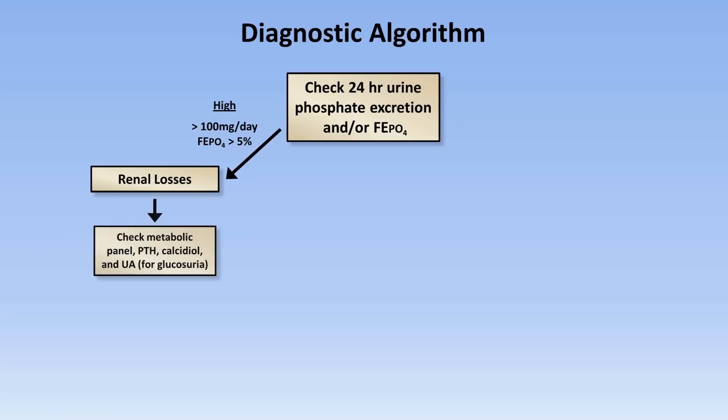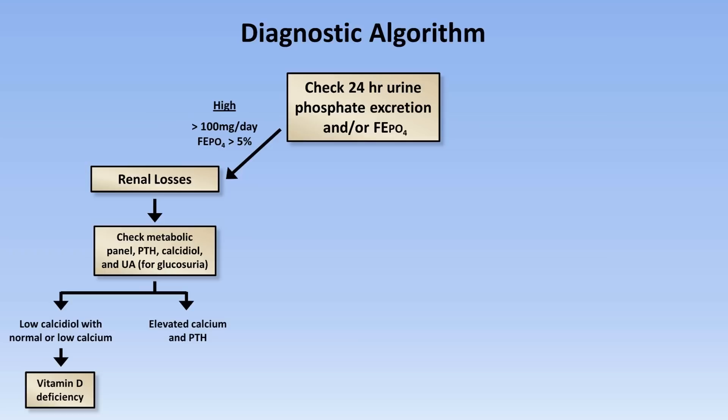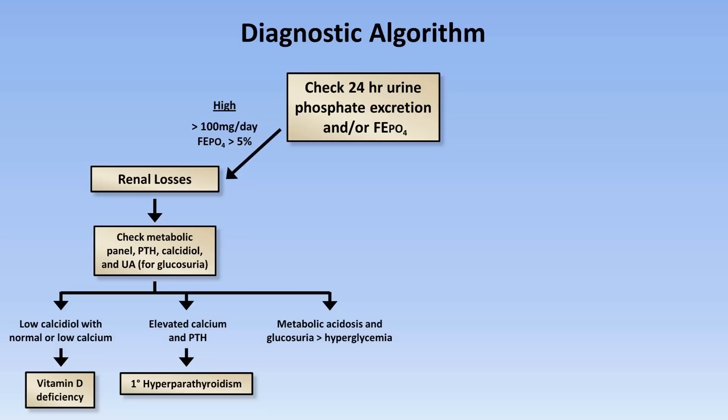At this point, you should review the metabolic panel, PTH, calcidiol, and check the UA for glucosuria. If the patient has low calcidiol with normal or low calcium, the diagnosis is vitamin D deficiency. If the patient has elevated calcium and PTH, the diagnosis is primary hyperparathyroidism. If the patient has a metabolic acidosis and glucosuria that is out of proportion to any hyperglycemia, you should consider Fanconi syndrome.